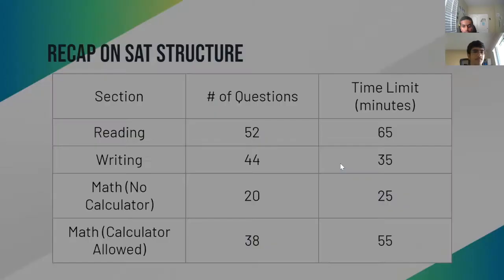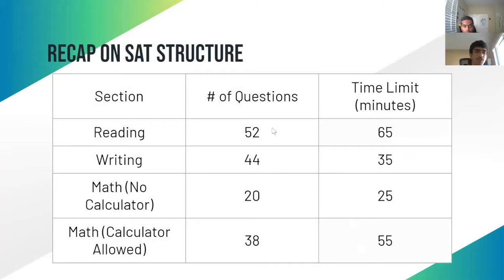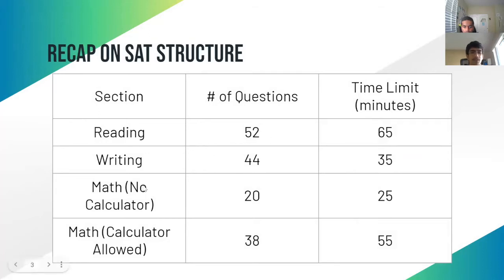Here's a quick recap on the SAT structure. On the reading section you have 52 questions and 65 minutes, which leaves you with about 1 minute and 15 seconds per question. On the writing section you have 44 questions and 35 minutes — less time per question — about 47 seconds each. For the math no-calculator section you have about 20 questions and 25 minutes, which is about 1 minute and 15 seconds per question.